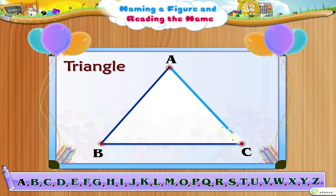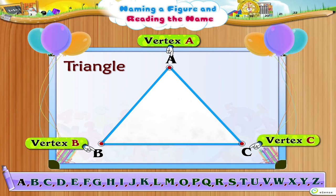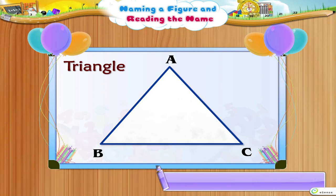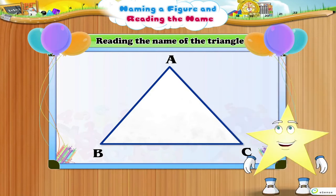This triangle can be named using vertex A, vertex B, and vertex C.